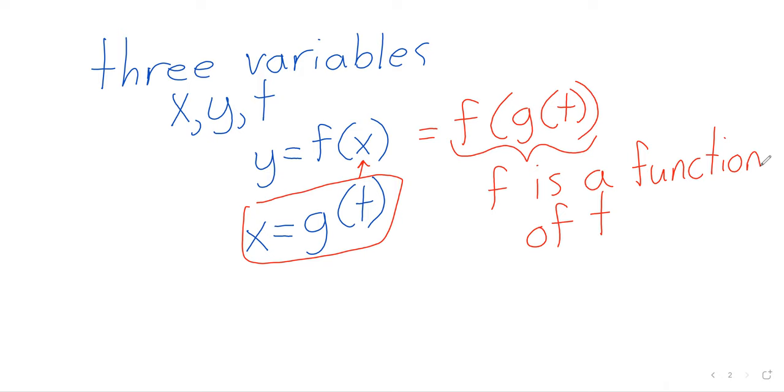We've got g of t stuck inside of f. So we have f of g of t. And what this notation is telling you is that f is a function of t. Let's try to make sure we're all on the same page with this statement. We have an input t, and from that input, we can get x.